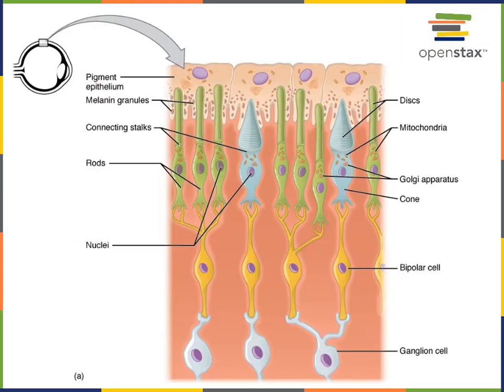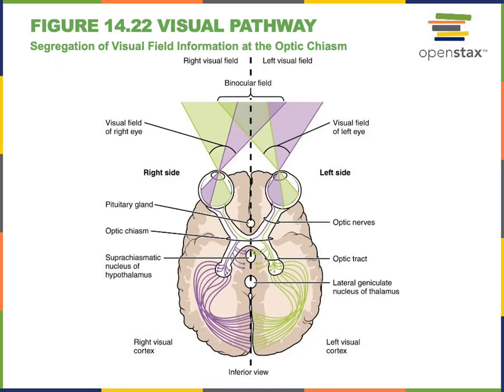Hyperpolarization then decreases the release of neurotransmitter from the photoreceptor cells onto the dendrites of bipolar cells. The sensory pathway for the visual modality starts with photoreceptor cells relaying information to the ganglion cells of the retina in the eye. These retinal ganglion cells then have axons that enter the cranium in the optic nerve, cranial nerve number two.